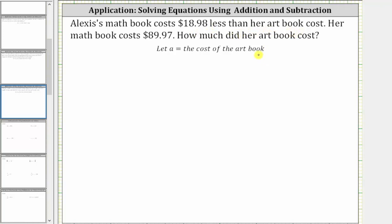Now let's write an equation that relates the cost of the art book to the cost of the math book. If we begin with A, the cost of the art book, which is the more expensive book, and subtract $18.98, this will equal the cost of the math book, which is $89.97.